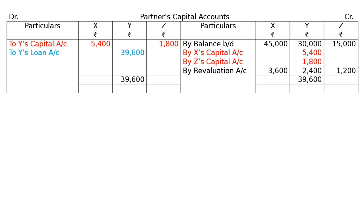Journal entry: Y's capital account debited to Y's loan account — Y's loan account 39,600. X's capital account totals 48,600 and Z's totals 16,200. Balance carried down: X's capital = 43,200 and Z's capital = 14,400. These amounts go to the balance sheet.